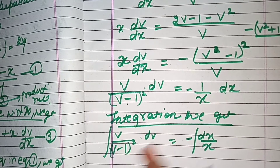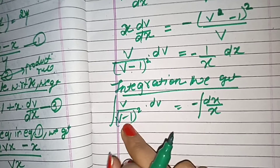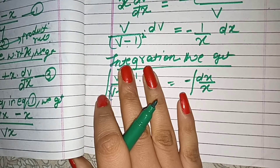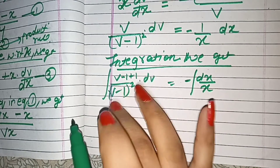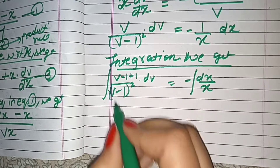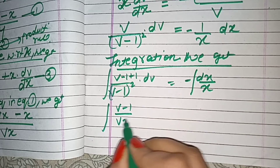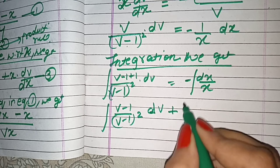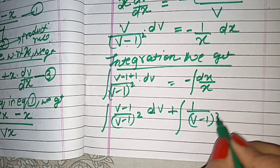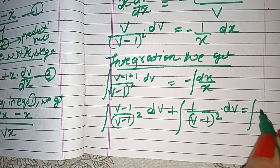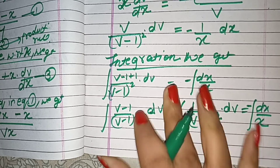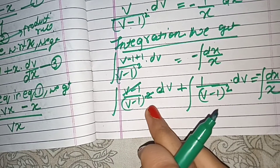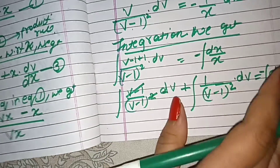We will integrate v over (v minus 1)² dv equals minus integral of 1 over x dx. Be careful not to ignore this minus sign. We need to do some algebraic manipulation here — we rewrite the numerator v as (v minus 1) plus 1, so we separate it as 1 over (v minus 1) dv plus 1 over (v minus 1)² dv, and this equals minus dx over x.